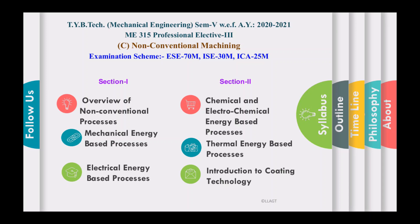Before covering the syllabus content, let me give an introduction to the course. There is a need for machine tools and processes which can accurately and easily machine the most difficult-to-machine materials and workpieces with intricate and accurate shapes. To meet these challenges, a number of newer material removal processes have been developed to the level of commercial utilization. These newer methods are also called advanced machining processes or unconventional machining processes, in the sense that conventional tools are not employed.